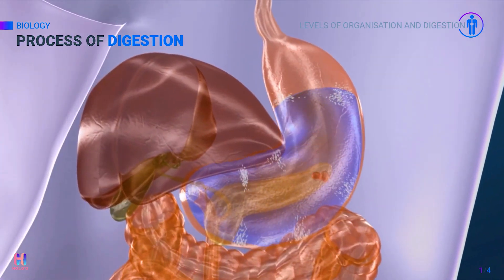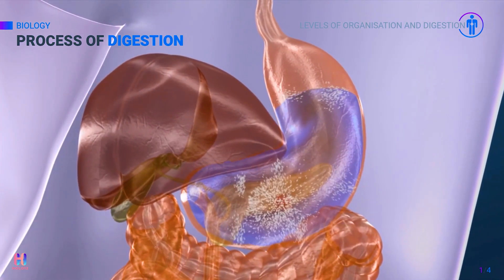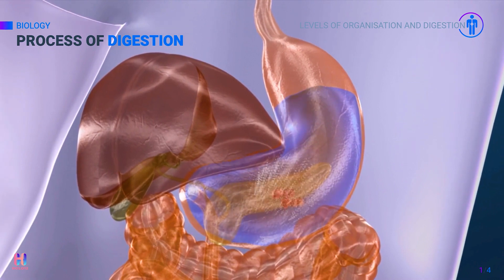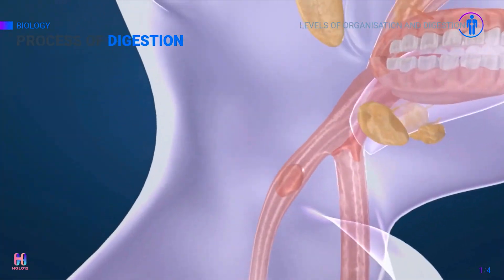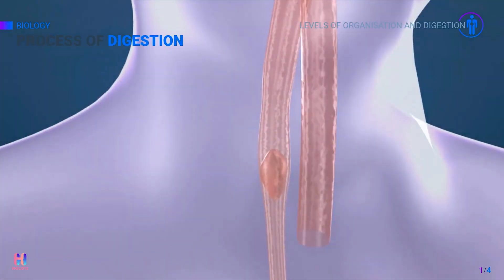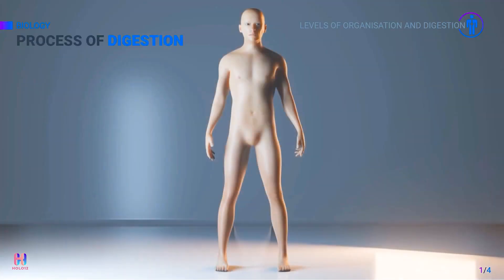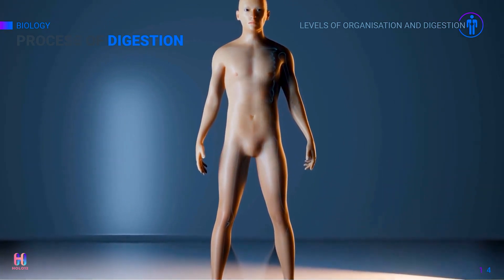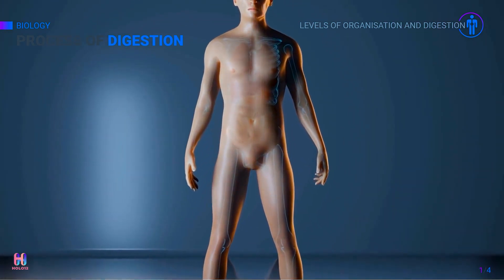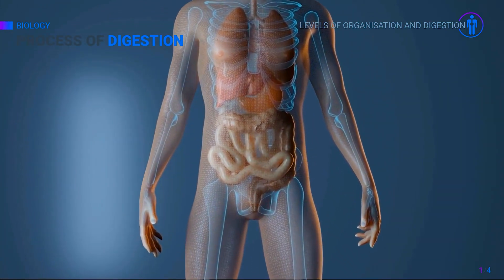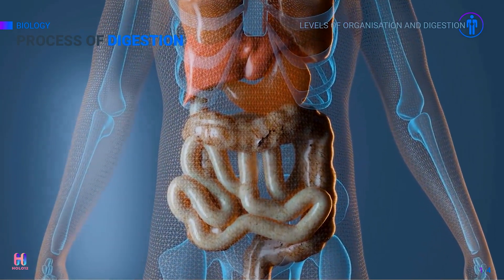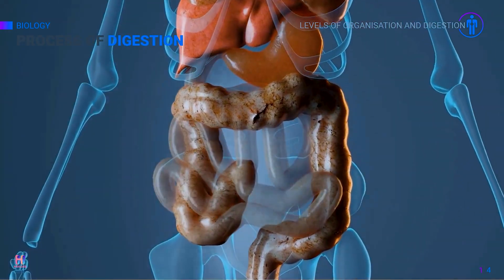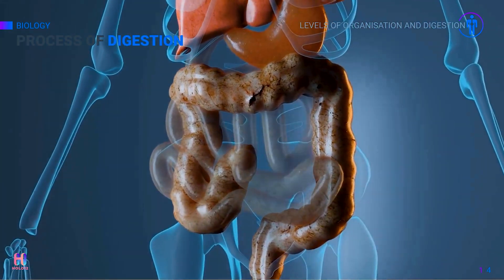The stomach also contains digestive enzymes to continue the breakdown of the components in the digested food. The process of using enzymes to break down food is called digestion. The digested products from the stomach are passed to the small intestine, where many small molecules are absorbed into the bloodstream — this process is known as absorption.